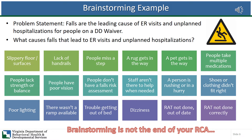Let's look at another example more related to the work you do every day. Here's our problem statement: falls are the leading cause of emergency room visits and unplanned hospitalizations for people on a DD waiver. What causes falls that lead to ER visits and unplanned hospitalizations? In a brainstorming session with my team, many possible causes were identified such as slippery floors, not having handrails, people missing a step, a rug, somebody rushing or being in a hurry, clothing that didn't fit right, being dizzy, the risk awareness tool had not been done or was outdated, and poor lighting. Brainstorming, however, is not the end of your root cause analysis — it is really only the beginning.